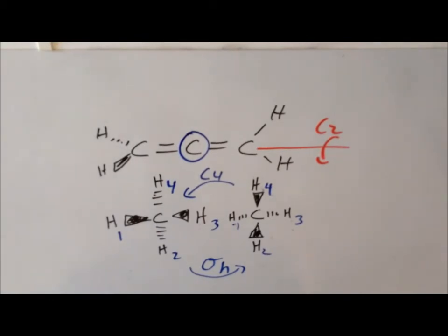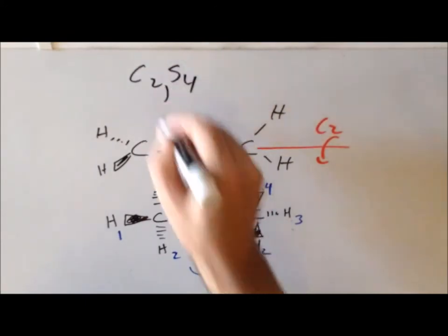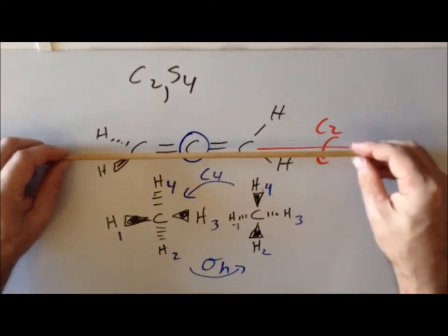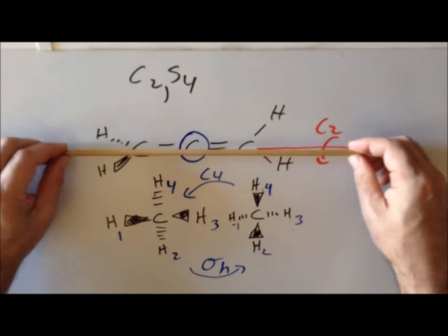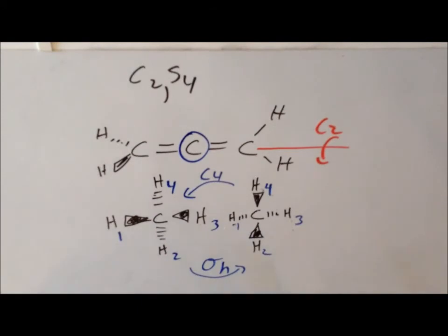Now we want to see if we have any C2s that are perpendicular to this C2, which is coextensive with our S4 high-order rotation axis. These perpendicular C2s are often difficult to see in the standard drawing of the molecule, but it's much easier to see when we use the alternative conformation representation.